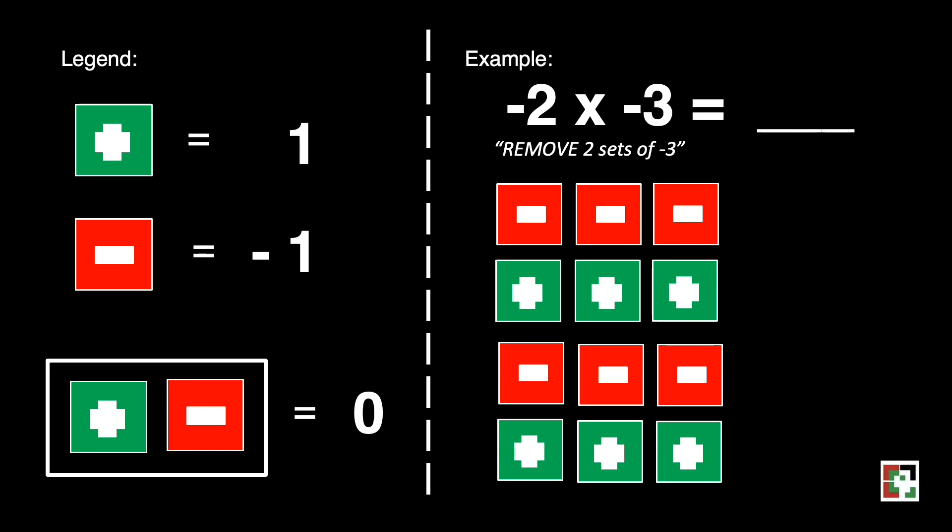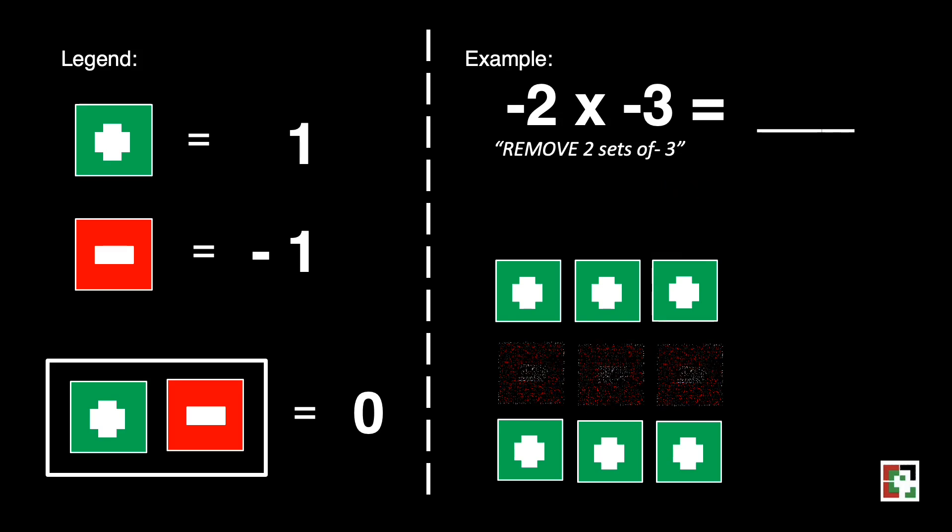Let's go back to the question. It says there that we will remove two sets of negative three. So, we'll be removing one set of negatives at the top and another set in the bottom.